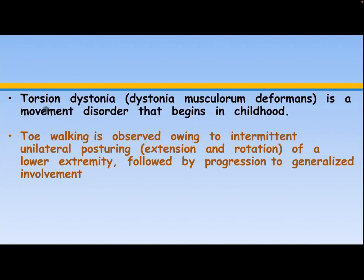Torsional dystonia, or dystonia musculorum deformans, is a movement disorder that begins in childhood. Toe walking is observed owing to intermittent unilateral posturing — extension and rotation of a lower extremity — followed by progression to generalized involvement.